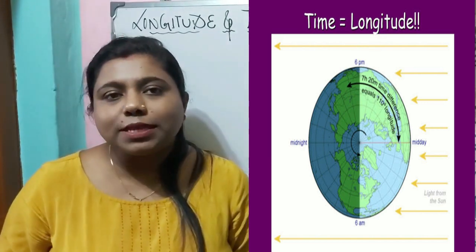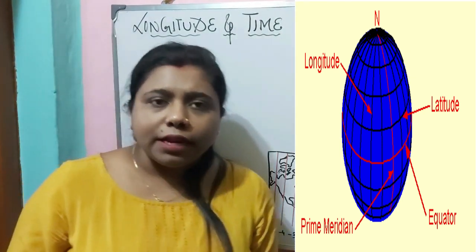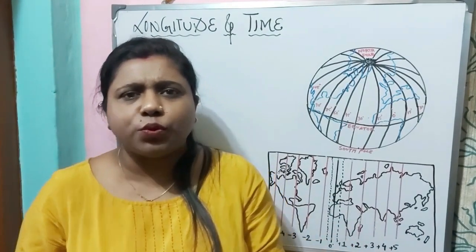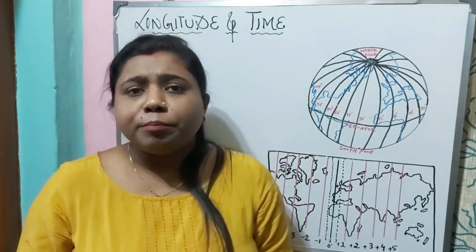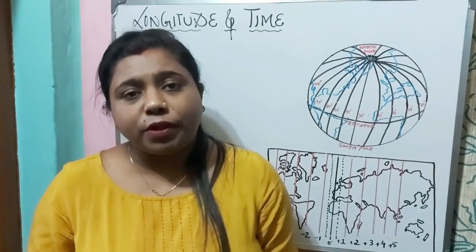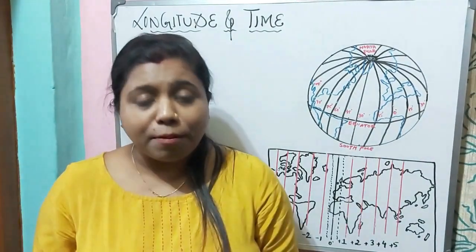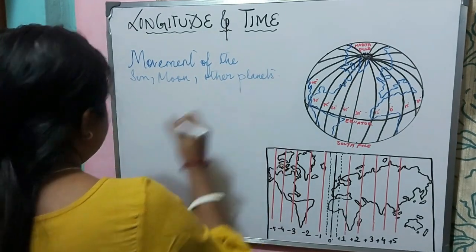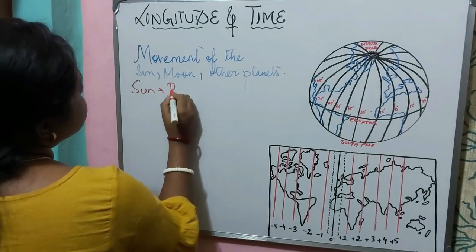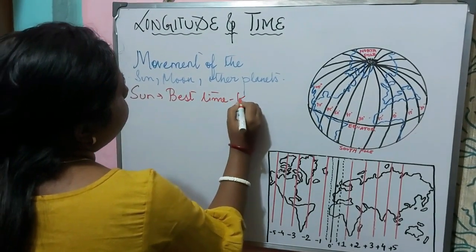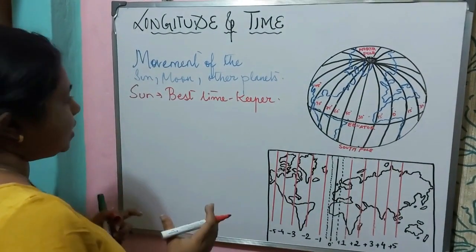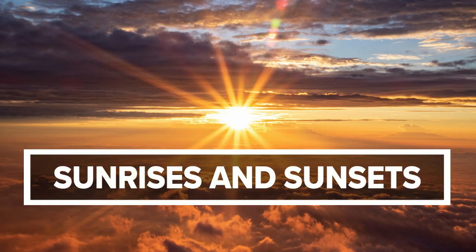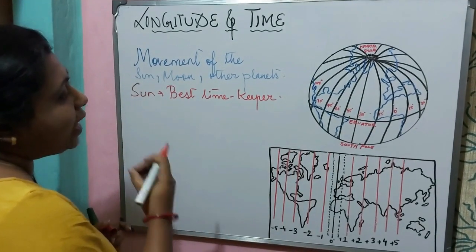In the last video I explained the concept of longitude and what is a grid. Now in the early days when there was no clock — you people have clocks now, or you can check the time on your mobile phone — but before the invention of the clock, how did people used to determine the time of a place? They used to determine it depending on the movement of celestial bodies, that is the Sun, the Moon, and other planets. The Sun is the best timekeeper, because every day the Sun rises and the Sun sets.